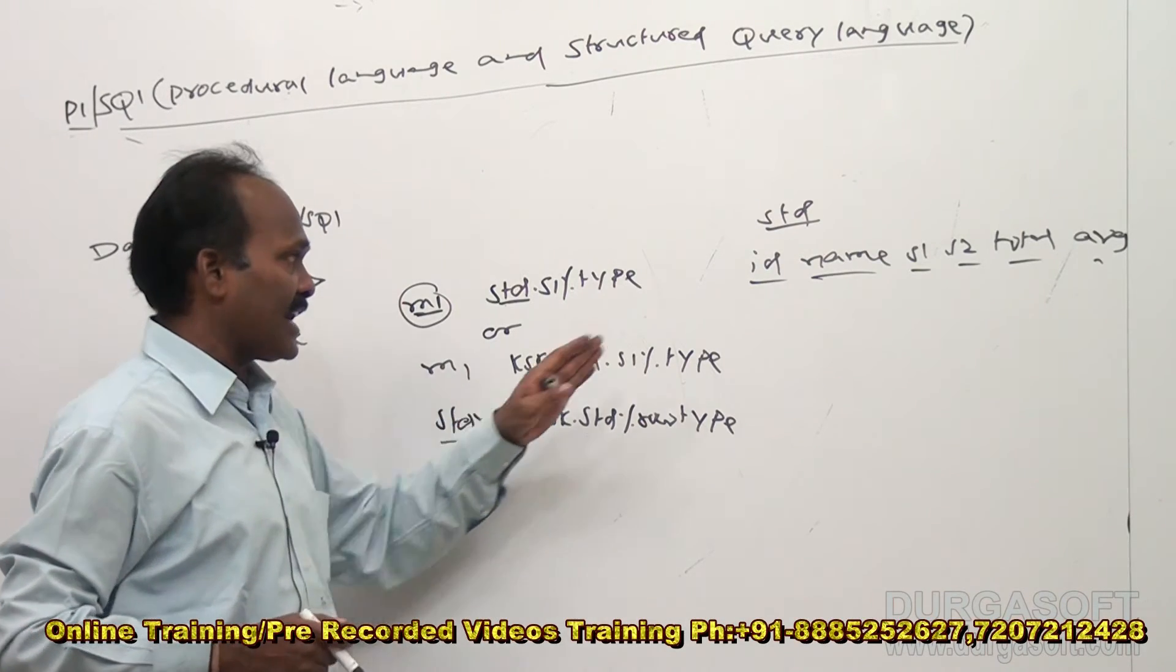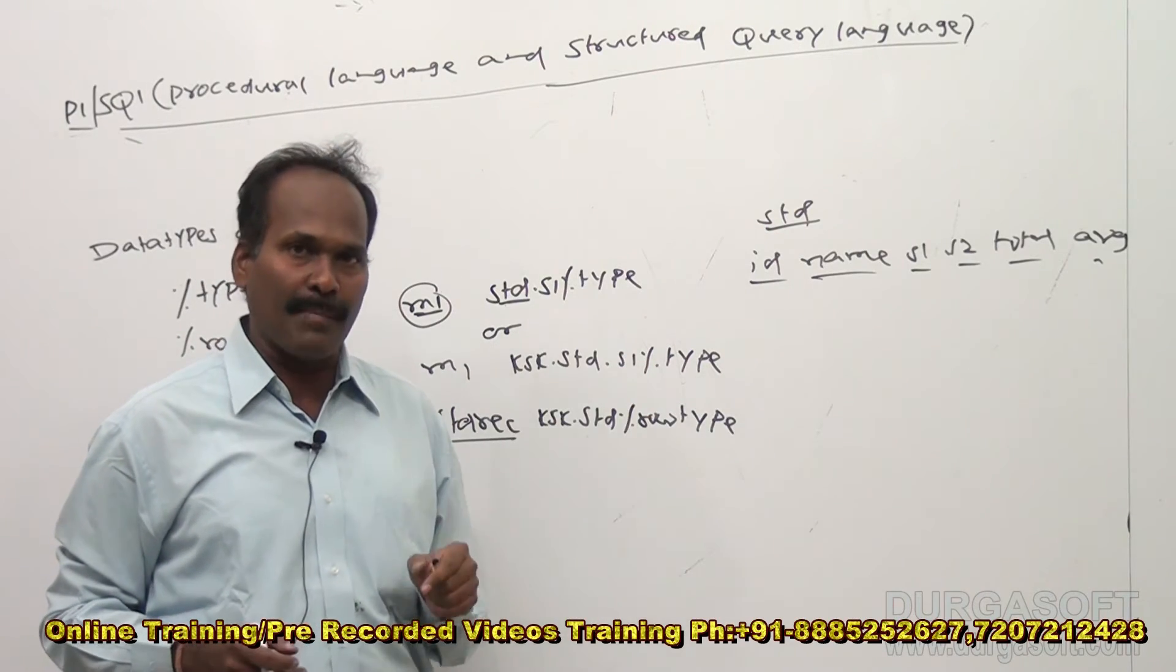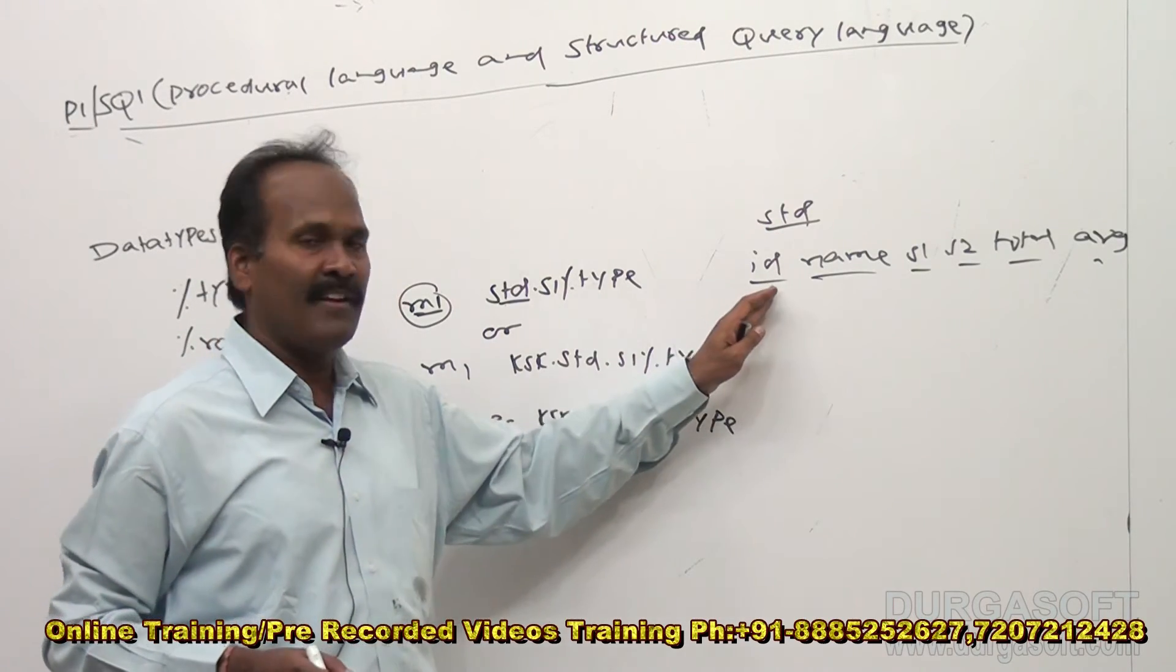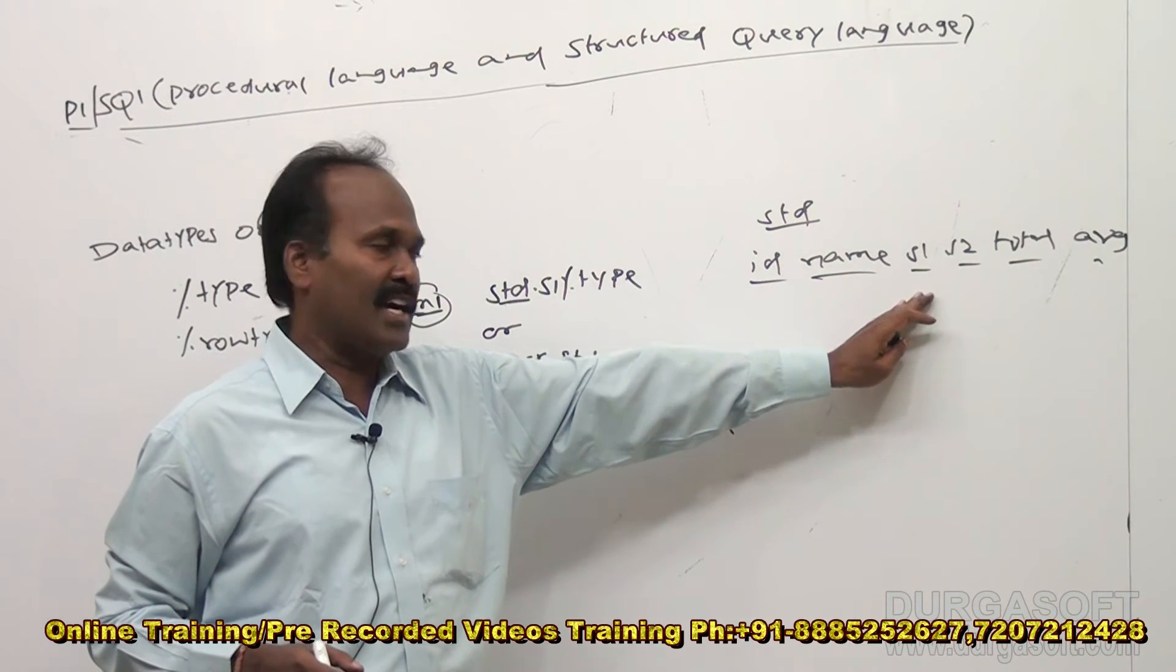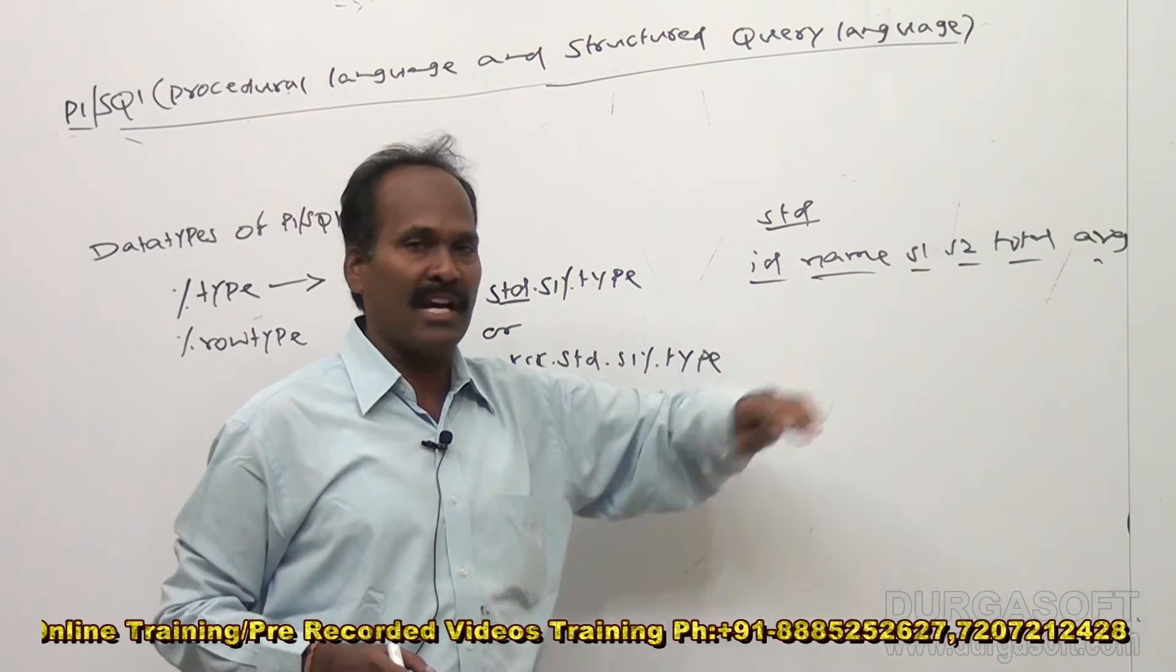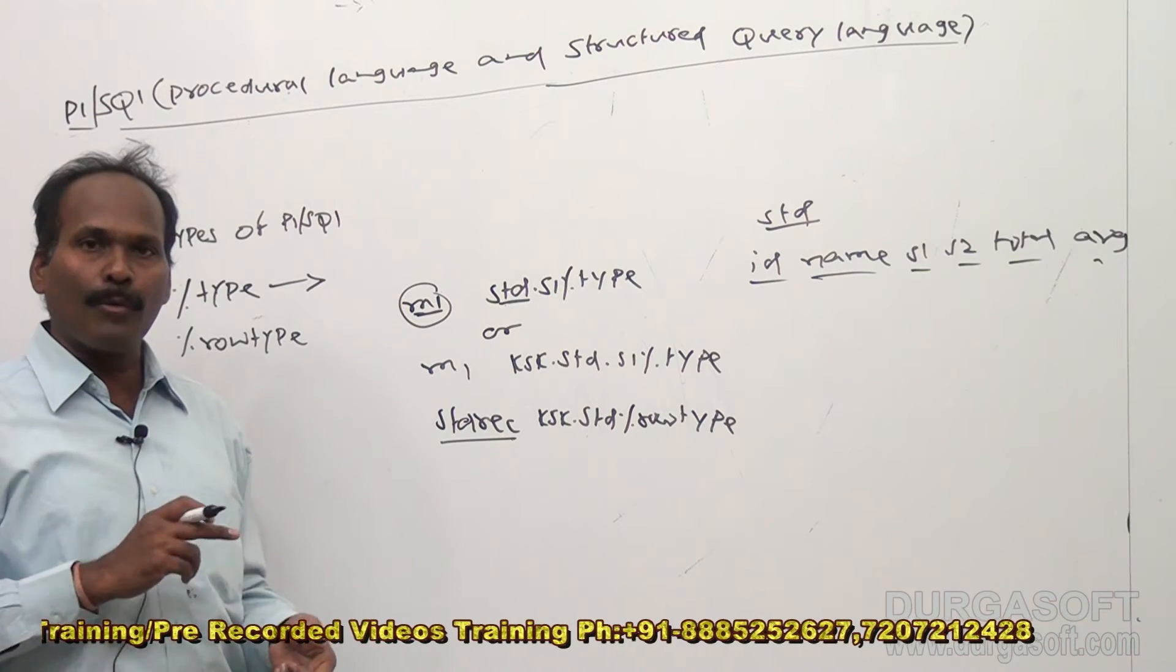Now from std_rec I can access all the columns by using dot notation, dot operator, like std_rec dot id, std_rec dot name, std_rec dot s1, std_rec dot s2, std_rec dot total, std_rec dot average. So like this I can make use of std_rec for group of columns.